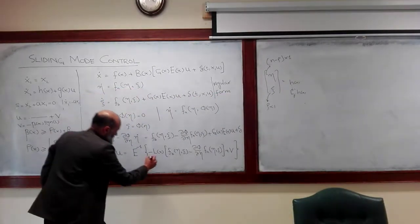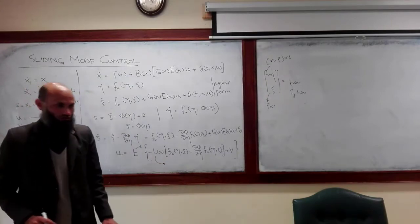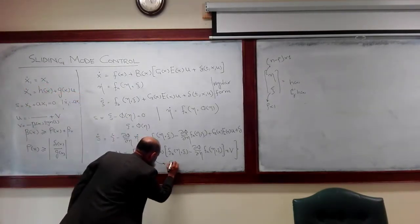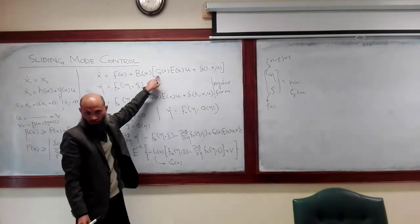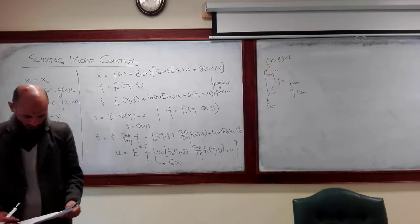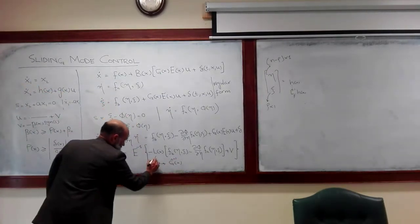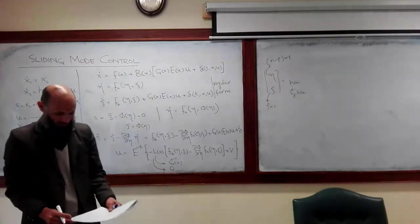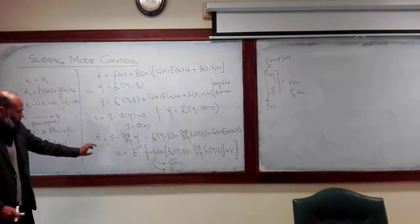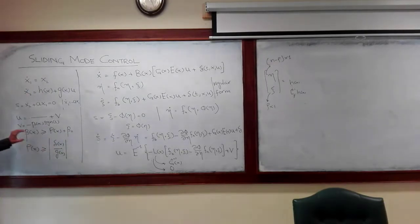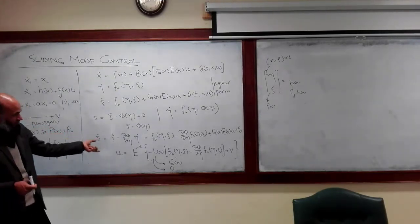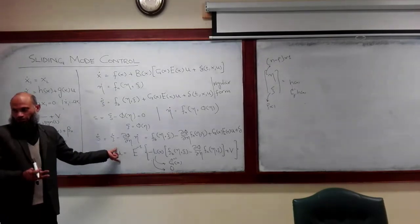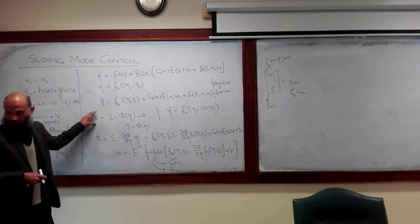L of x can be taken equal to G-hat inverse of x — the nominal model of G — if the nominal model is known. If the nominal model is not known, it can simply be taken as zero. We need to ensure that this control law will cause any initial condition to converge to this sliding surface.